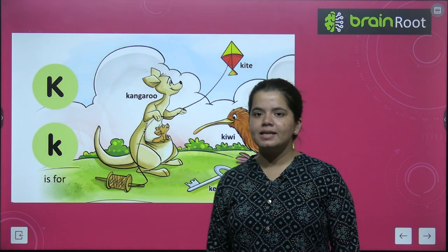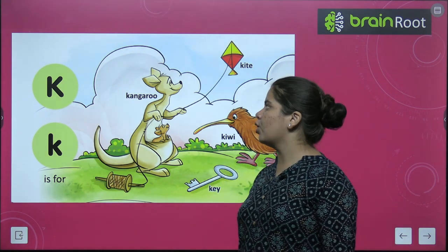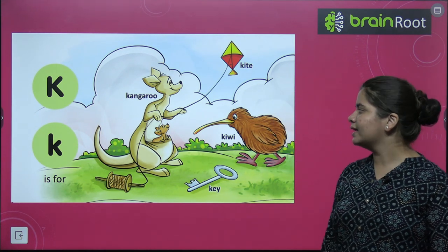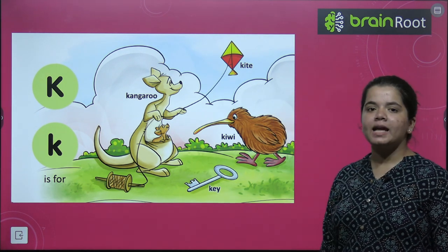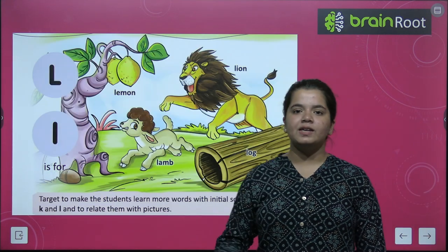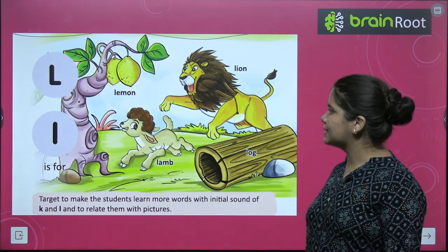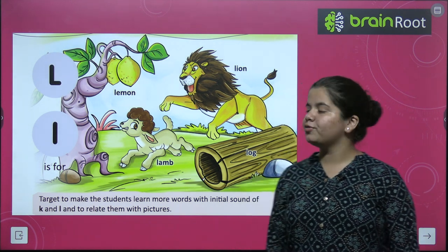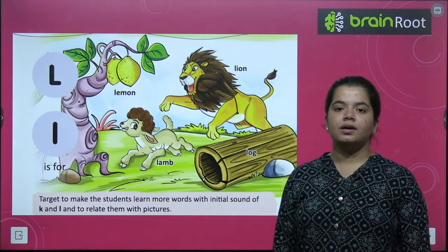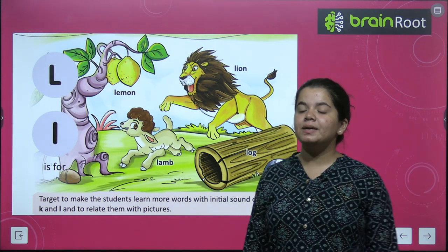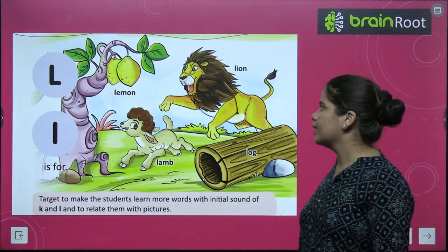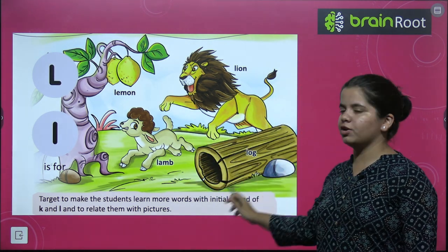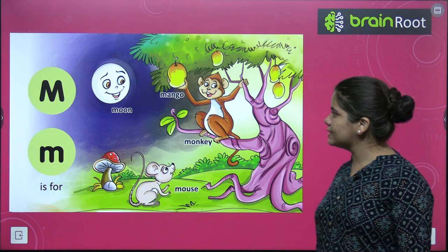Next is K. K for kangaroo, K for kite, K for kiwi. Next is L. L for lion, L for lamb. Lamb kya hota hai — lamb is the baby of a sheep. L for log bhi hota hai.